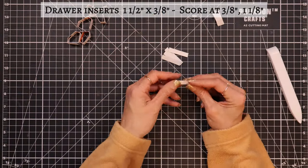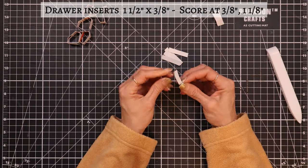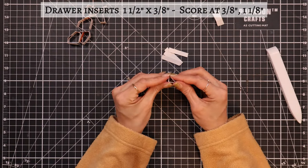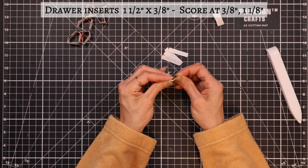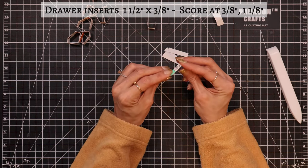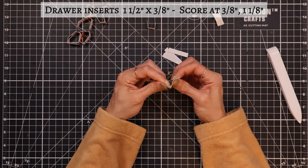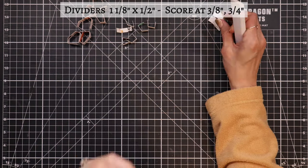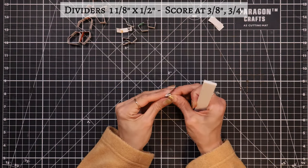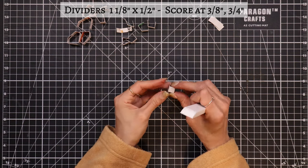I repeat the scoring and folding process with the drawer inserts and the drawer dividers. For the drawer inserts, I score them at three eighths of an inch and one and one eighth inch. For the dividers, I score them at three eighths of an inch and three quarters of an inch.